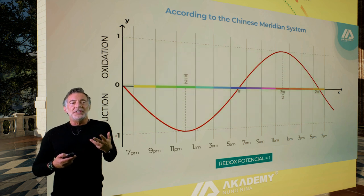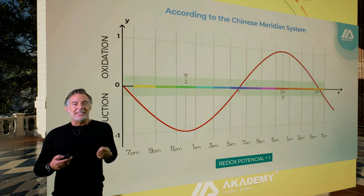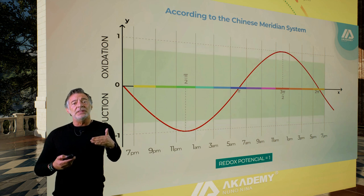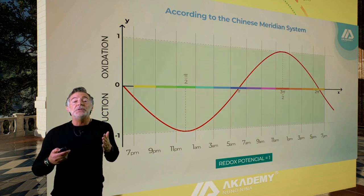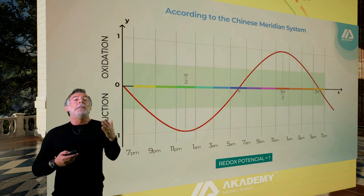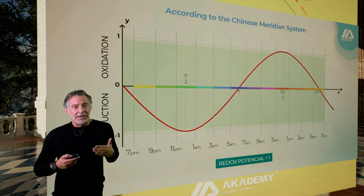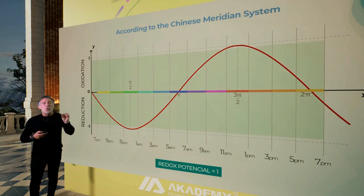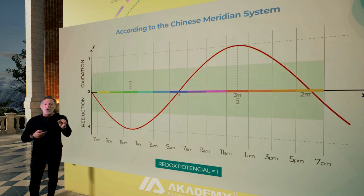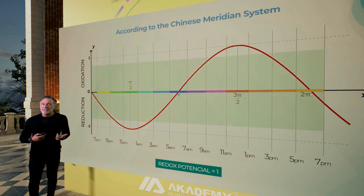What I want you to understand here is that the minus one and the one must be reached in order to have a correct metabolism. Okay? This is really important. When my cycle hits one and minus one, all my organs have correct redox capacity.